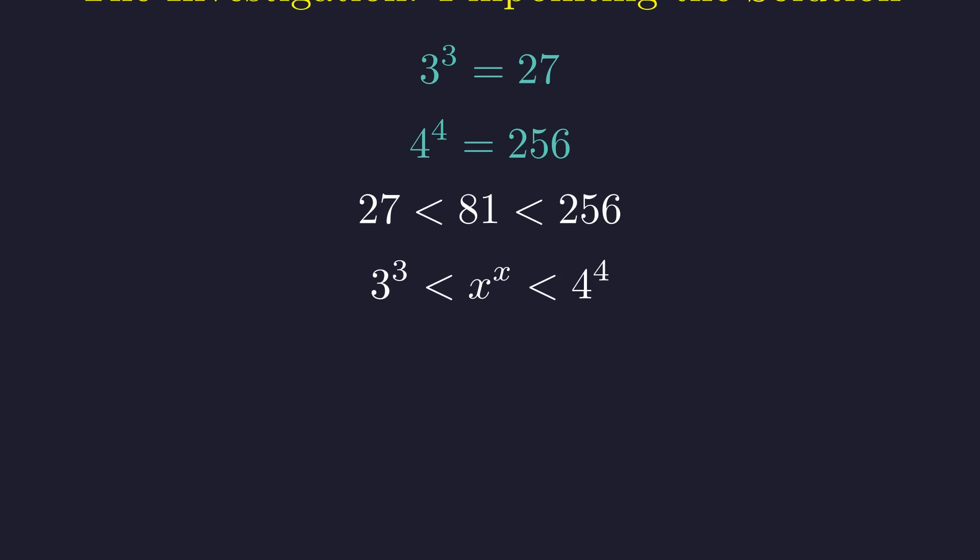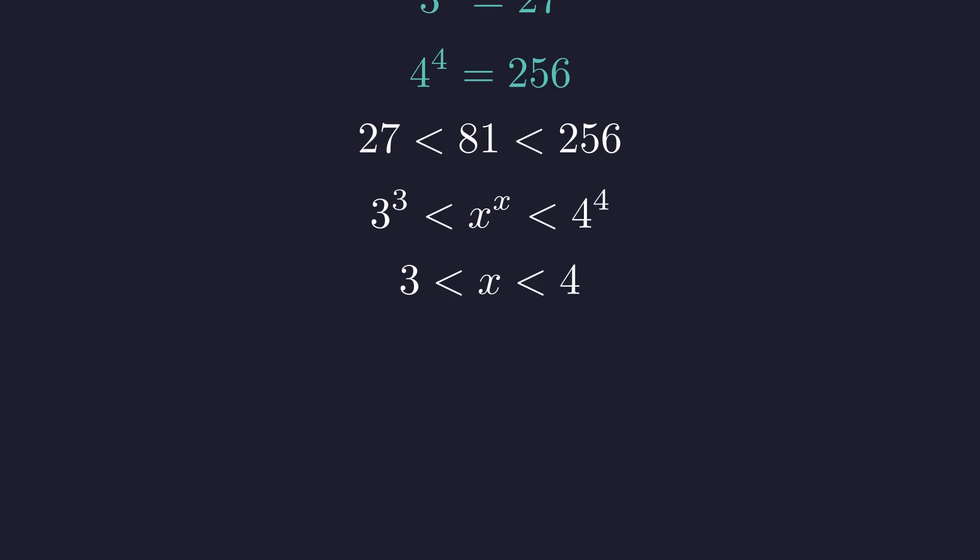This implies that 3 to the 3 is less than x to the x, which is less than 4 to the 4. Because the function f of x equals x to the x is strictly increasing on this interval, it follows that the solution for x must lie between 3 and 4. This confirms that the solution cannot be an integer. Our search must extend to non-integer real numbers.